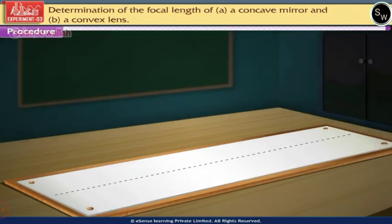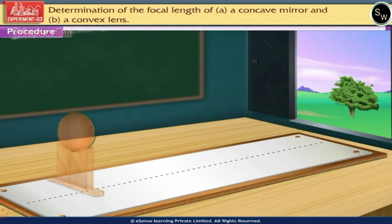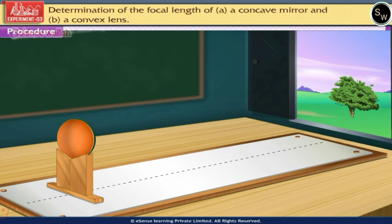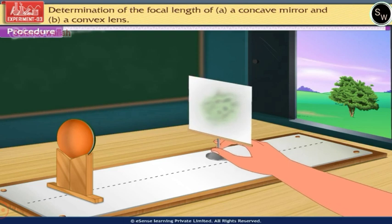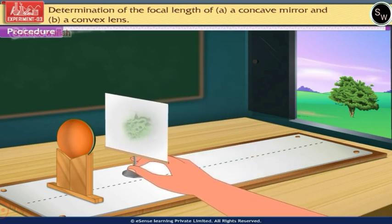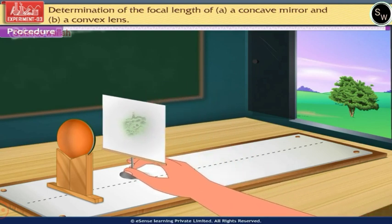Select a distant object such as a tree. Place the concave mirror so that the reflecting surface faces the tree. Now place the screen in front of the mirror and move it towards or away from the mirror until a clear image of the tree is obtained on the screen.